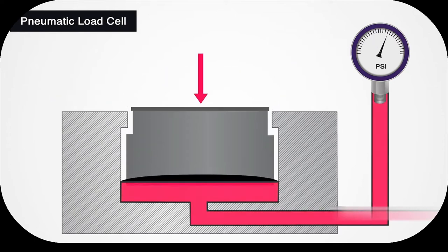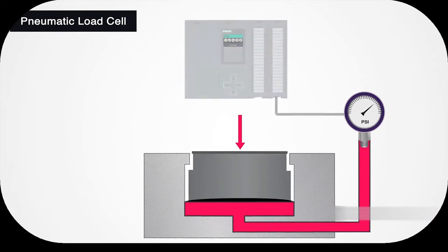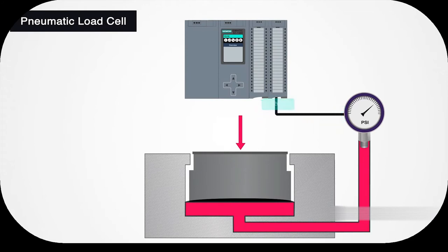When a load is placed on the loading platform, the piston applies pressure to the liquid contained inside it. The pressure increase of the liquid is proportional to the applied force or weight. After calibrating the pressure, you can accurately measure the force or weight. The pressure reading can be read as an analog gauge or converted into an electrical signal from a pressure sensor.